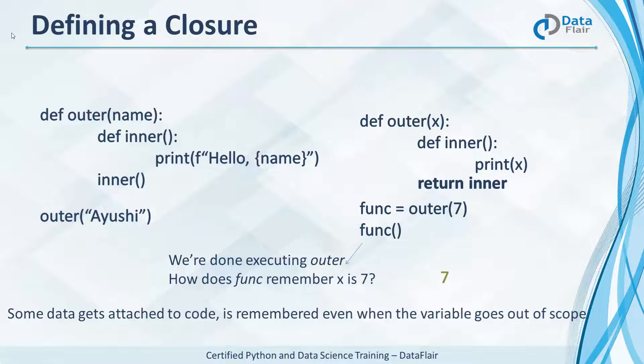7 gets attached to x. This allows it to work even if we delete outer before making a call to func.